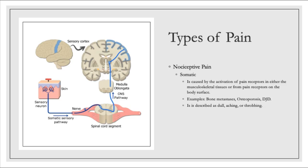Somatic pain is very common and you will see it a lot in palliative care and hospice patients. In palliative care, we typically see this with bone metastasis, osteoporosis, and degenerative joint disease. People will complain of a chronic, nagging, dull, achy, throbbing pain. A lot of the times it originates somewhere in the skin or bone, follows the somatic sensory pathway, and goes to the sensory cortex where our body reads it as painful. Somatic pain tends to be more chronic, and there is a specific type of treatment for it.